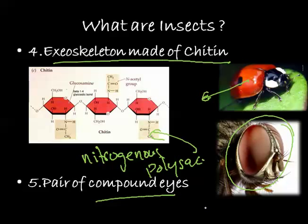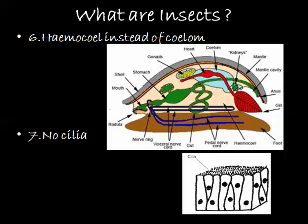The next very prominent characteristic is the presence of a hemocoel instead of a coelom. In mammals and other vertebrates we have a coelom, but here insects have a hemocoel portion in the stomach area.